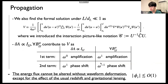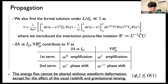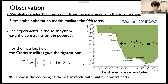Next we consider the next order. We also find the formal solution. These expressions include contributions from the B_μIJ part, which causes ω-zero amplification and ω-linear phase shift. We can observe the delta-A part, but B_μIJ has frequency-dependent wave deformations, so we cannot observe this with GR templates. Therefore, the energy flux cannot be altered without waveform deformation, except for the effects of the usual redshift and gravitational lensing, which is the standard gravitational lensing effect.